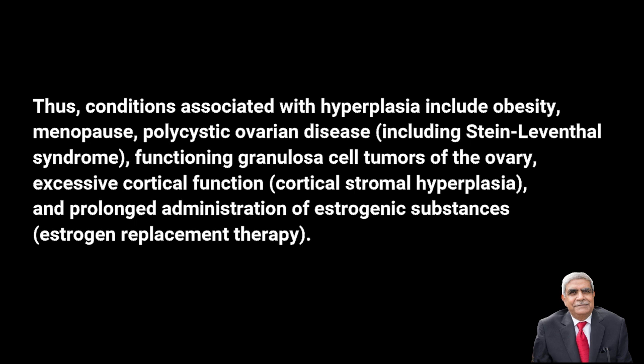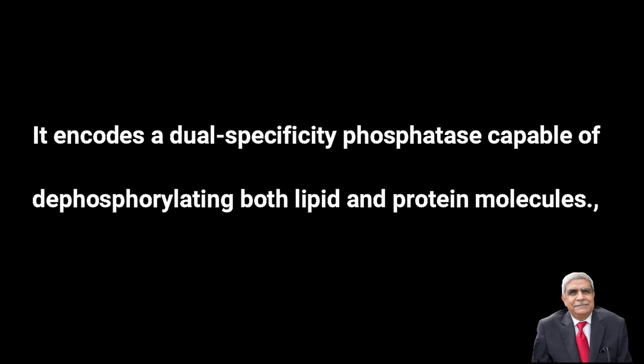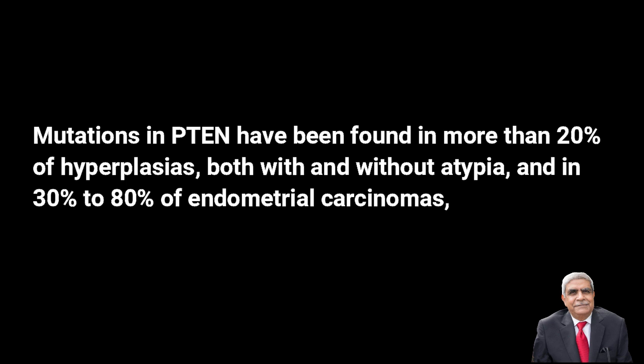The genetic alteration commonly found in endometrial hyperplasia is inactivation of the PTEN tumor suppressor gene, located on the q arm of chromosome 10. PTEN encodes a dual specificity phosphatase capable of dephosphorylating both lipid and protein molecules. When PTEN is inactive, AKT phosphorylation is enhanced, which stimulates protein synthesis, cell proliferation, and at the same time inhibits apoptosis.